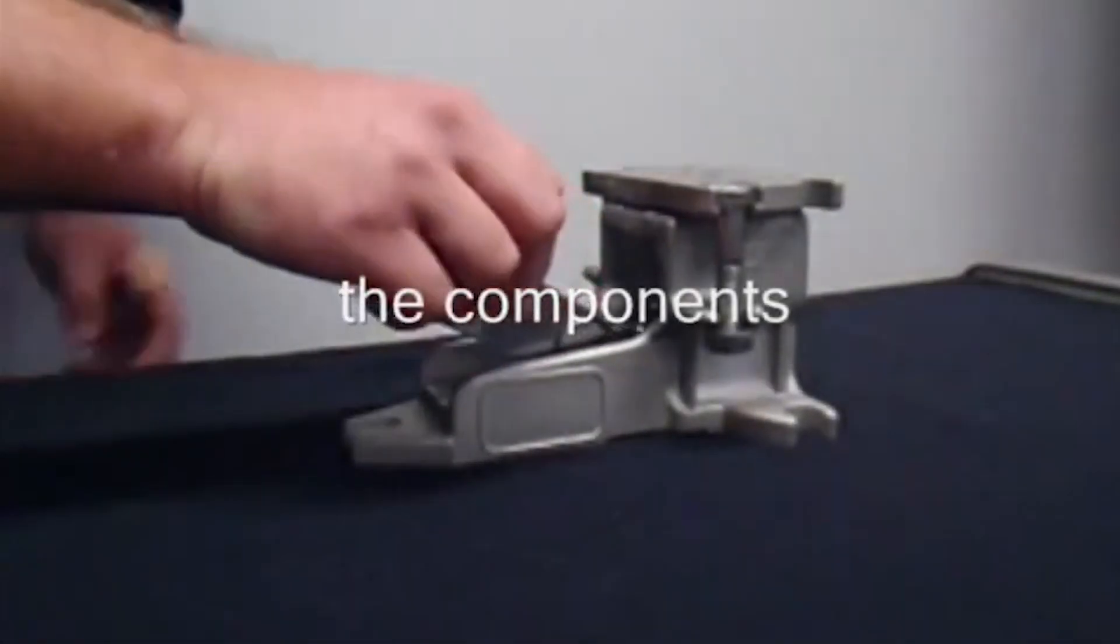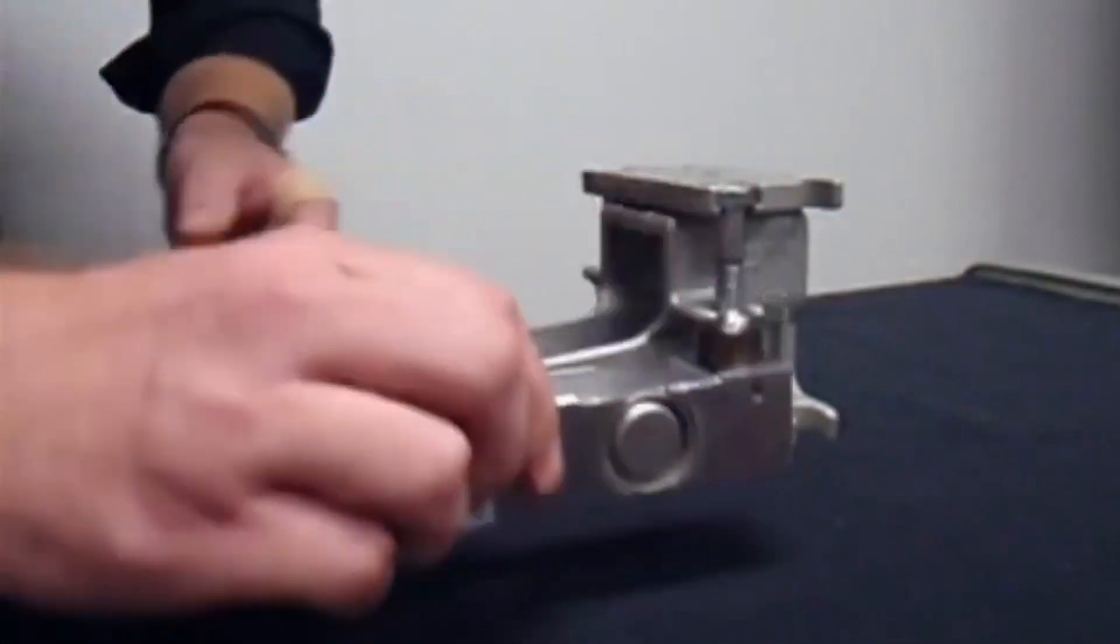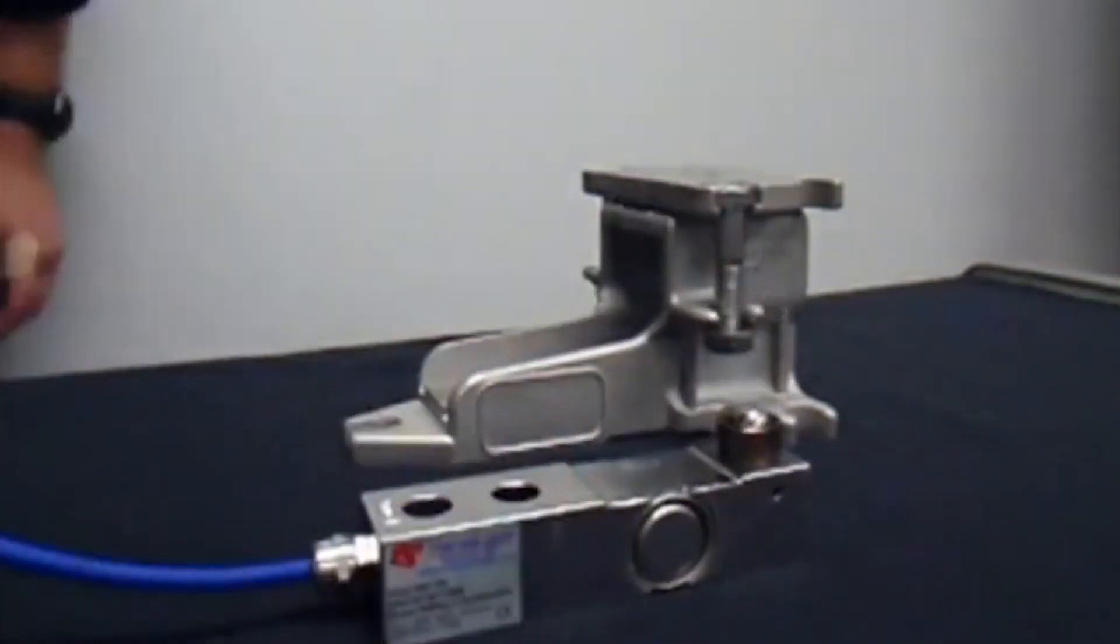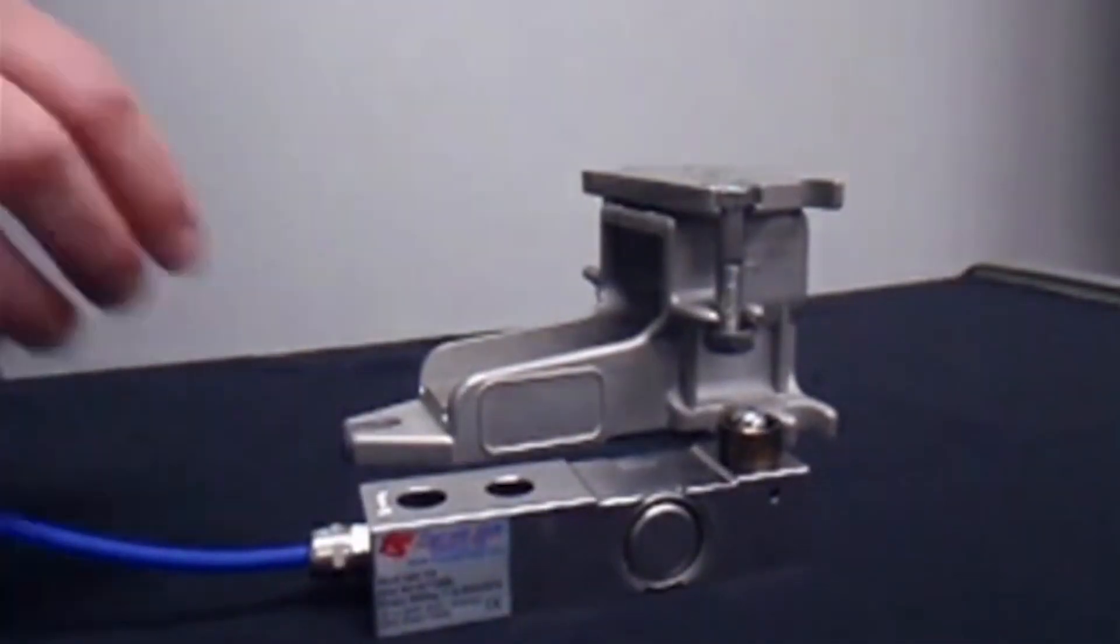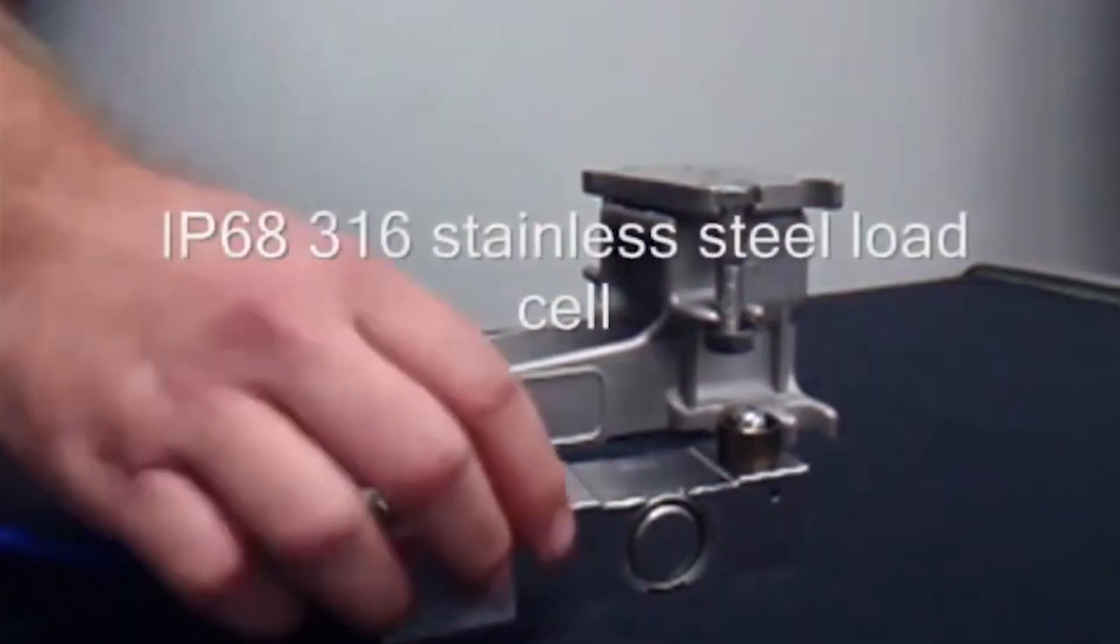Firstly, we'll have a look at the components, and first to get off the rank is the IP68 rated load cell. It is hermetically sealed stainless steel and should operate in all harsh environments.